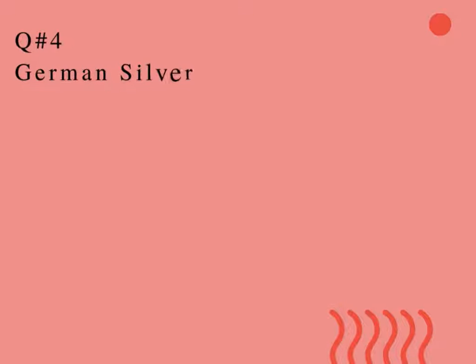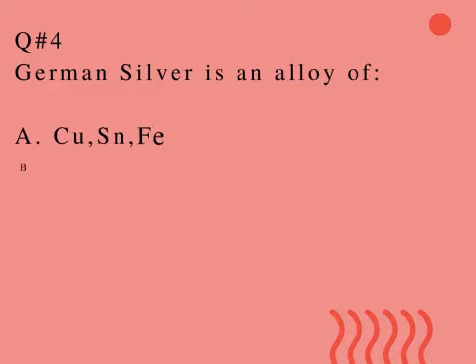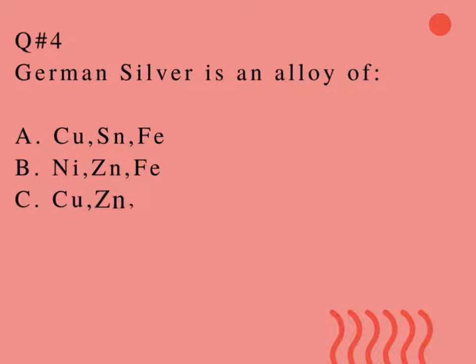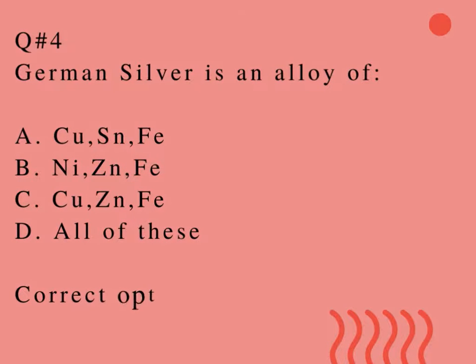Question number 4. German silver is an alloy of: A. Copper, tin, iron. B. Nickel, zinc, iron. C. Copper, zinc, iron. D. All of these. Correct option is D.